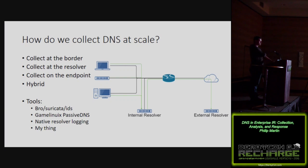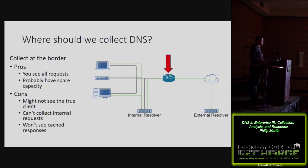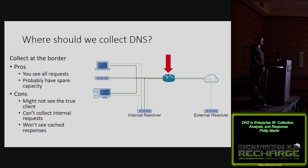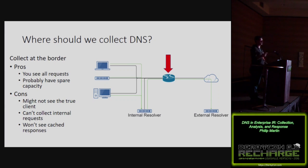You have four basic collection options. First, you can collect at your border — the pro is you see everything transiting your network. The downsides are you won't see true client IPs, you miss internal requests to internally hosted domains, and you miss cached responses, which can be a huge problem if multiple clients are resolving the same malicious domain.